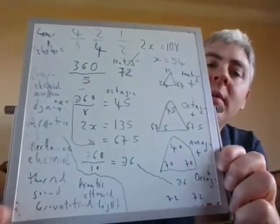For the nonagon, 40 is at the top and two 70s at the bottom. For the decagon, 36 is at the top and there are two 72s at the bottom — 360 divided by 10 equals 36, which relates to the decagon.